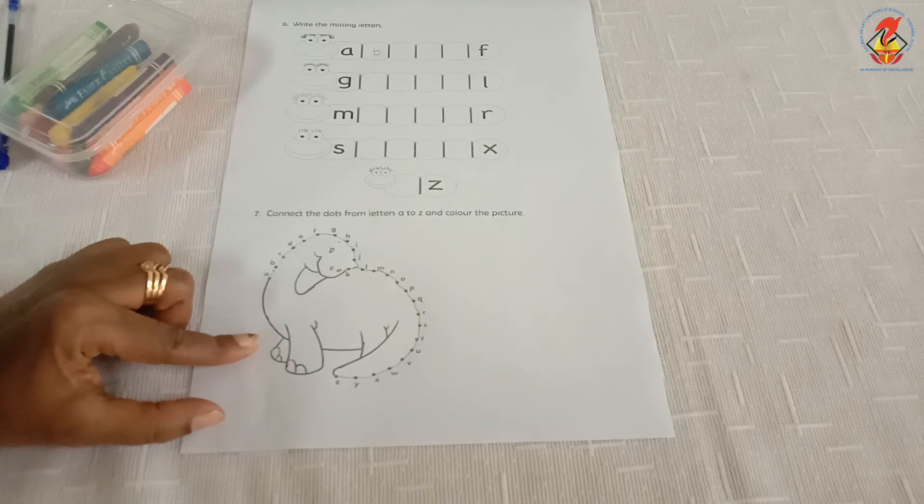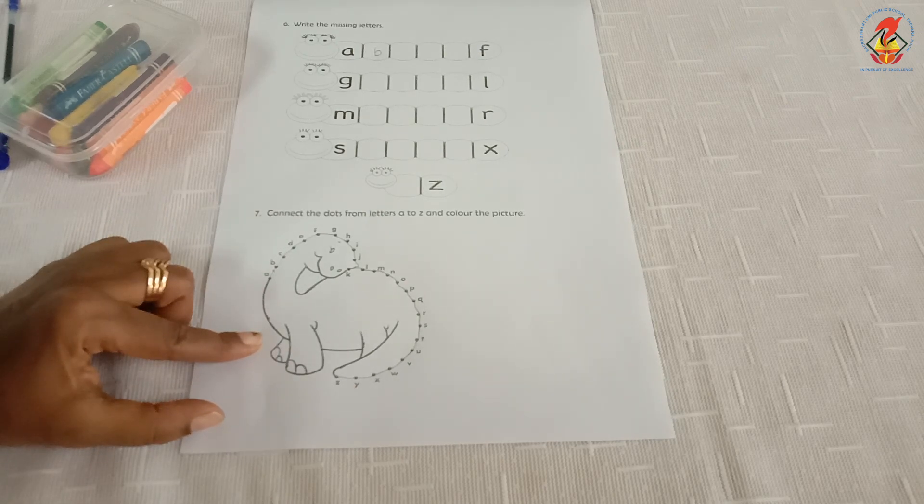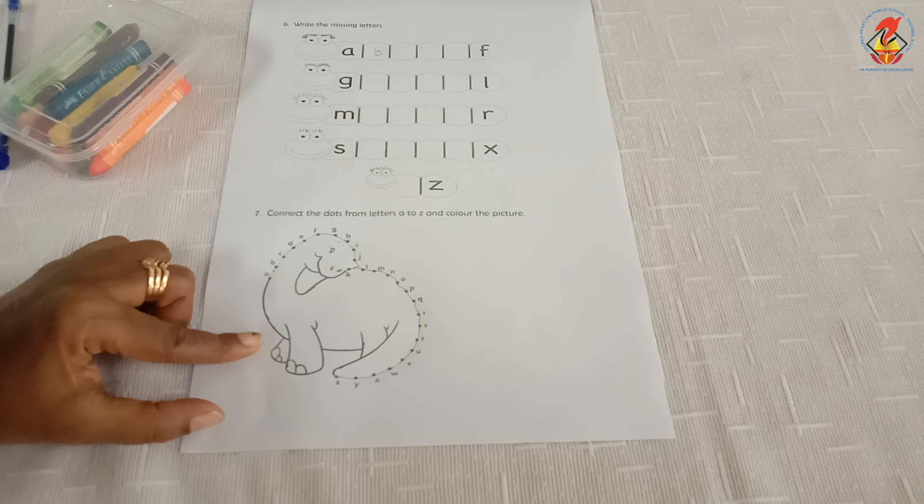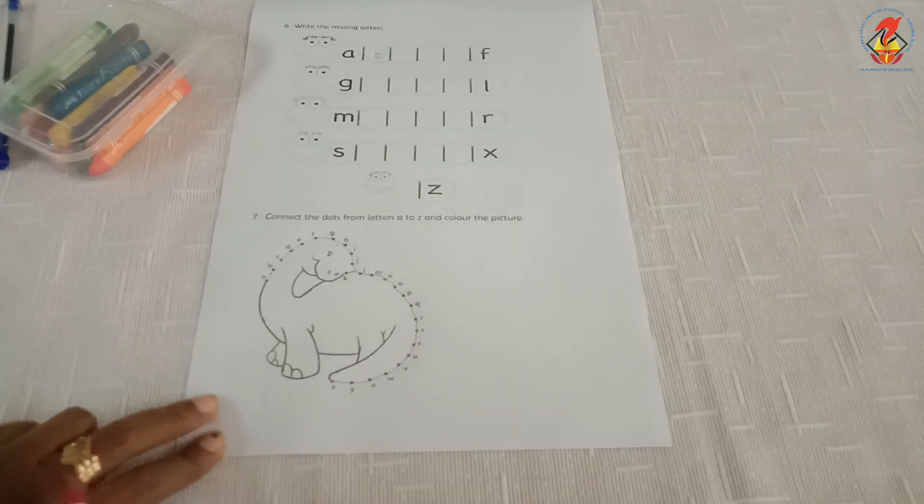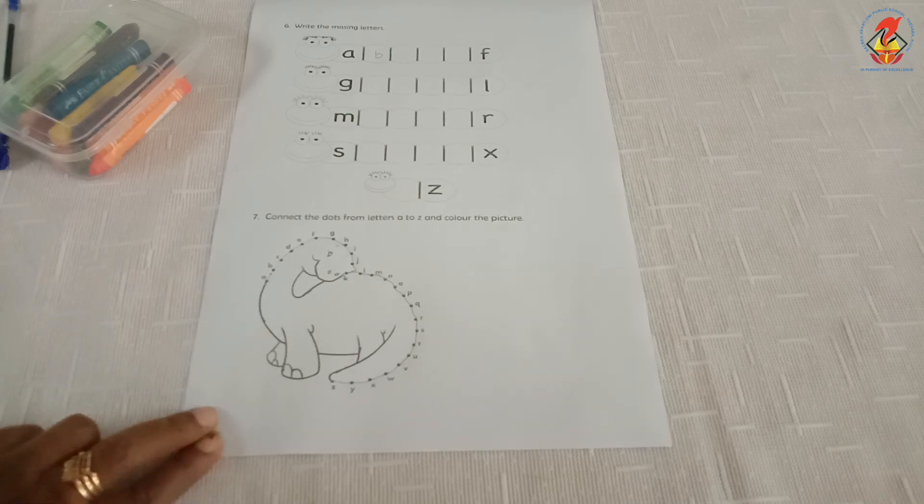Okay. So, now you got the picture. What is this? Yes, now you got a dinosaur here. So, you have to color this picture.